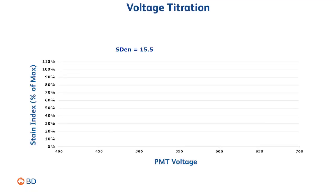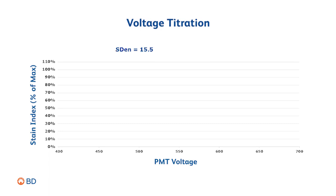If you don't know the electronic noise, you can still optimize your detector to maximize resolution by performing what is called a voltage titration. To do this, run a sample such as anti-CD4 stained cells or capture beads at different voltages and calculate the stain index at each voltage. The goal is to use the lowest PMT voltage that will maximize the stain index. Above this PMT setting, there is no improvement in the stain index.